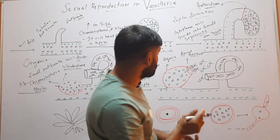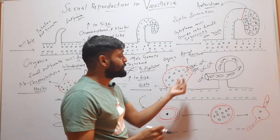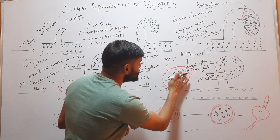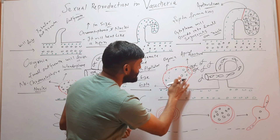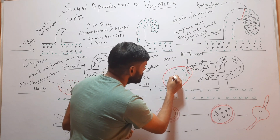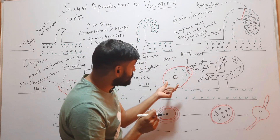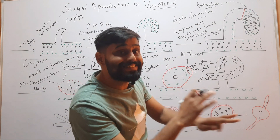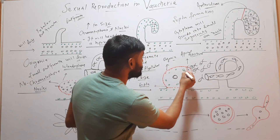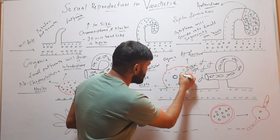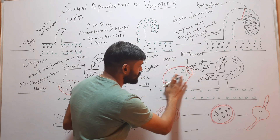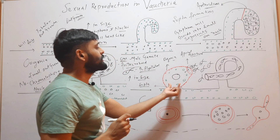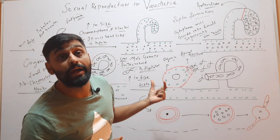Only one Antherozoid will reach and fuse with the egg. Before fertilization occurs, the Oogonium is multinucleate, but all these nuclei will degenerate except one, which remains functional. The Antherozoid loses its flagella and fuses with the functional nucleus, resulting in a diploid nucleus — the structure is now called the zygote.